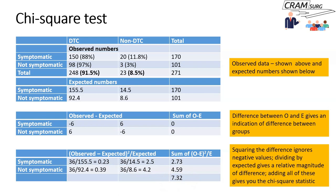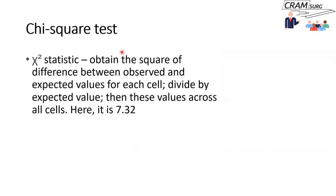In plain terms: you're seeing how much you'd expect if there's no difference between the arms, you're looking at the difference between observed and expected, and you're calculating the chi-square statistic. The higher the chi-square statistic, the more the groups are going to differ. To summarize: obtain the square of the difference between observed and expected for each cell, divide by the expected value, then add these values across all cells. The value here is 7.32.